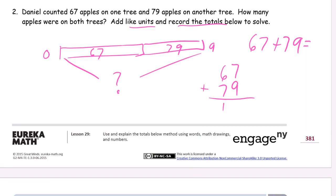Seven plus nine is sixteen. We can draw another line underneath. And sixty plus seventy is 130. Six plus zero is six. One plus three is four. And that hundred is all by itself, so it's just a hundred. One hundred forty-six. One hundred forty-six apples were on both trees.